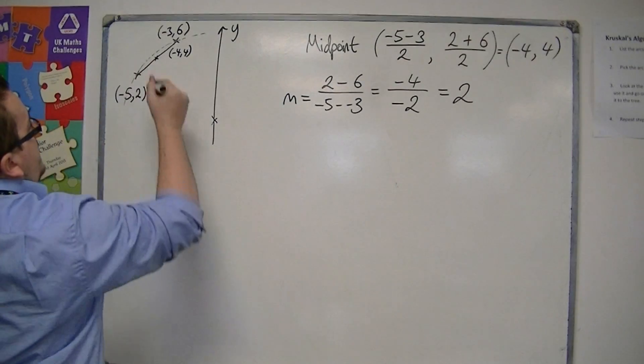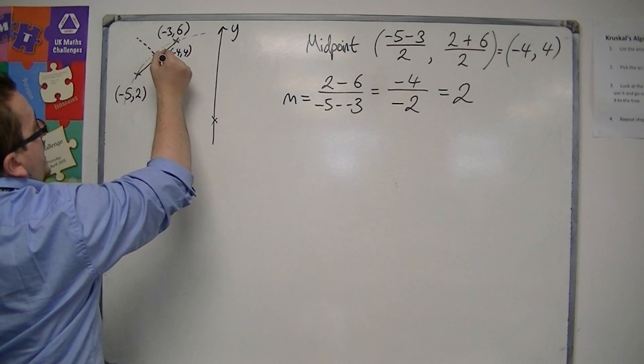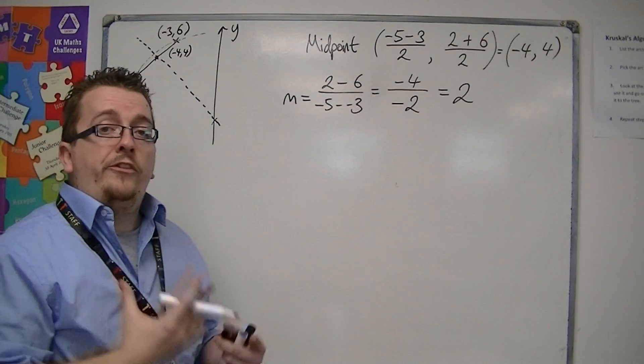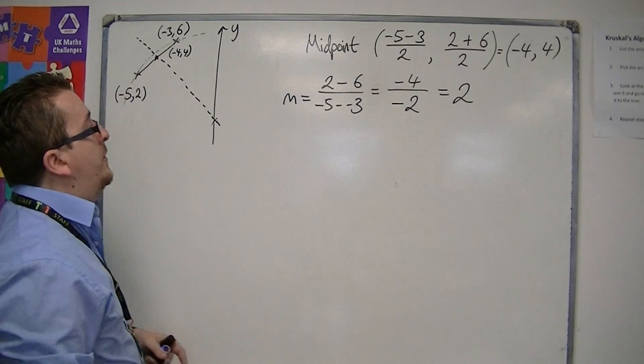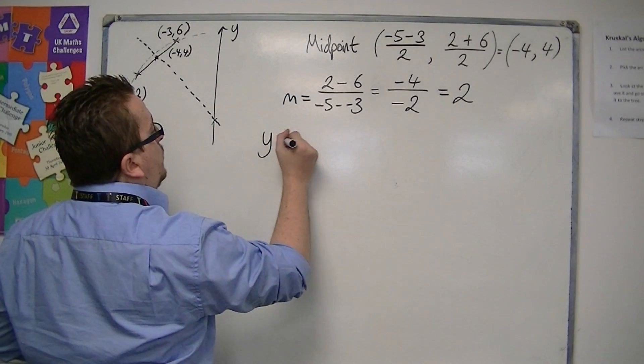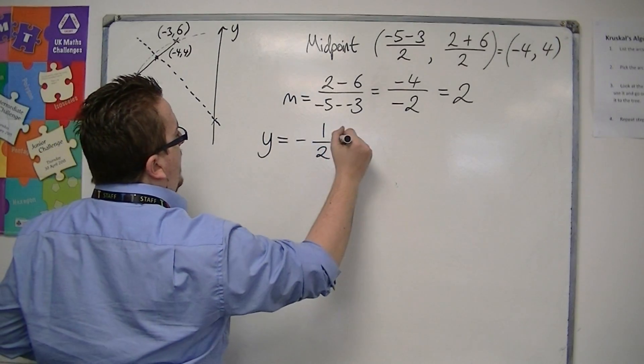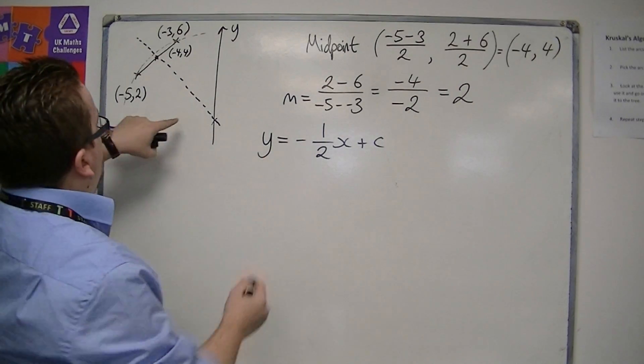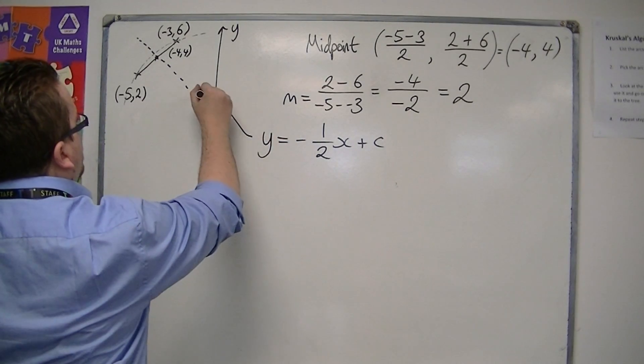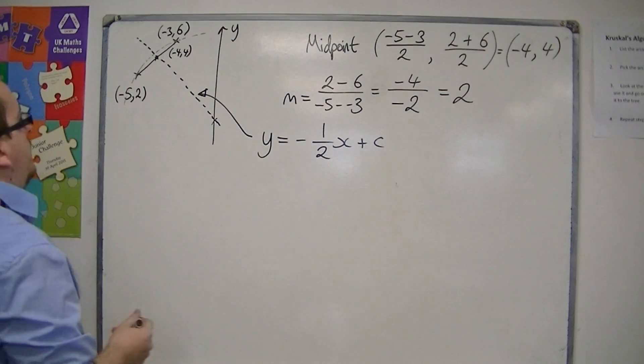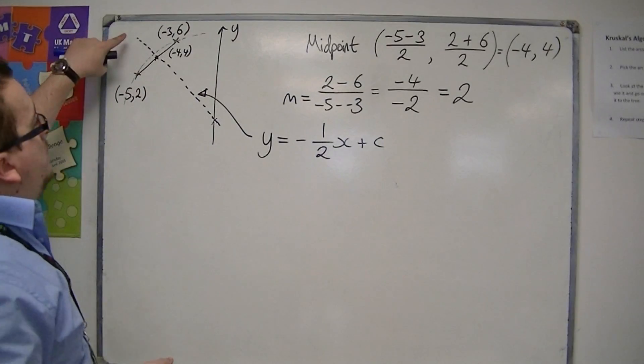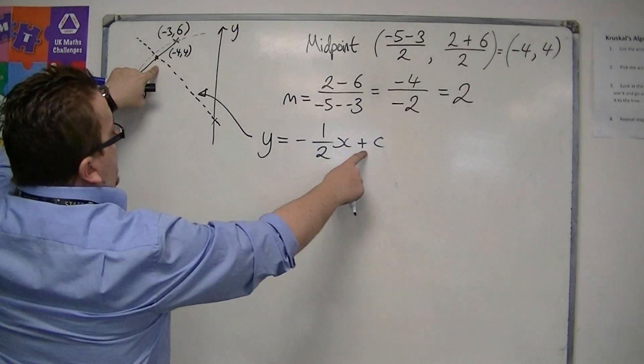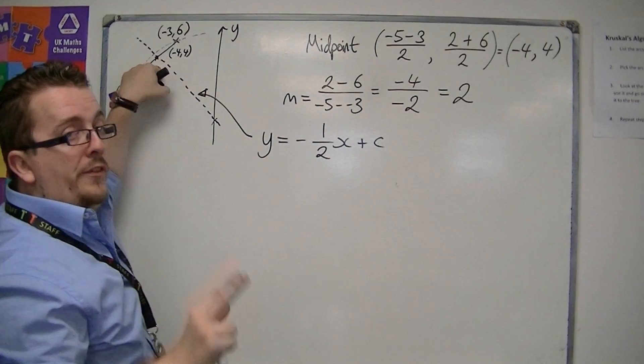So the gradient of the perpendicular bisector would be minus 1 half, because it must be the negative reciprocal. So y is equal to minus 1 half x, plus a constant c. And this is the equation of this line, this normal, if you will.